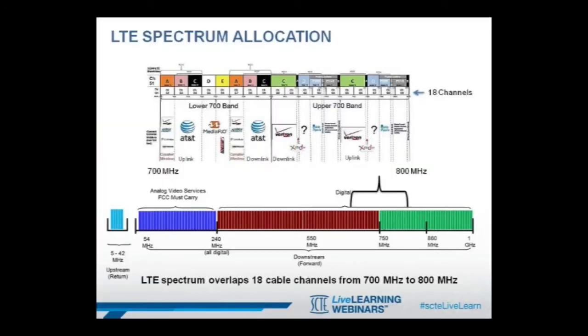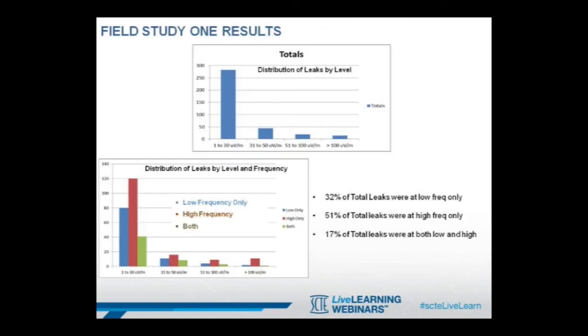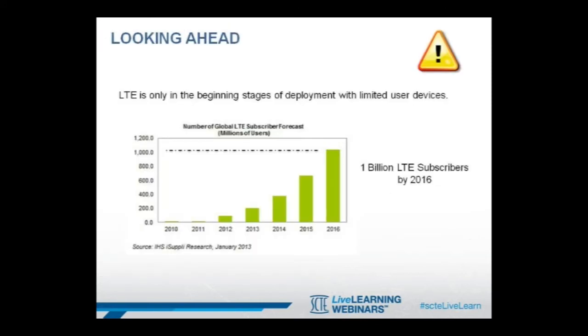Why do we care about digital leakage? Beyond the fundamental reason to control ingress from getting into our cable plant, digital leakage has the potential to interfere with new LTE cellular services, and vice versa. There are currently about 18 cable channels in the U.S. that operate in the 700 to 800 MHz frequency spectrum that LTE currently operates in. Early field studies are showing that there are more leaks in this frequency range compared to the low-frequency FAA band that we have been monitoring. Not only are there more leaks, but they tend to be higher in leakage level. As LTE subscribers grow, the issue of LTE interference will also continue to escalate.